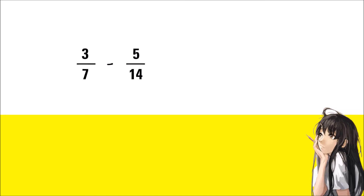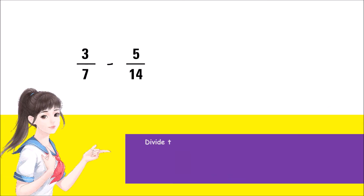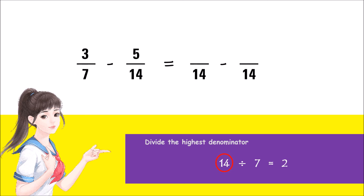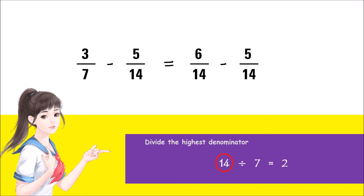Now let's subtract unlike fractions by finding the LCD. Subtract 3 sevenths minus 5 fourteenths. To solve for the LCM of the denominators, let's try to divide the highest denominator first and see if the remainder is 0; if not, we proceed to listing their multiples. 14 divided by 7 is 2, therefore the LCM of 7 and 14 is 14. Divide the LCM by the denominator and multiply the answer by the numerator: 14 divided by 7 is 2; 2 times 3 is 6. 14 divided by 14 is 1; 1 times 5 is 5. The results are the new numerators and the denominators will be the LCM. The LCM is now your LCD. Then subtract: 6 minus 5 is 1. The difference of 3 sevenths minus 5 fourteenths is 1 fourteenth.